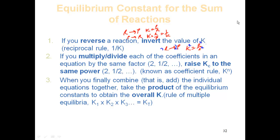When you combine — meaning add up individual reactions — you add them just like with Hess's law. However, what you do with the K's is different: instead of adding delta H's, the K values are multiplied together to obtain the overall K. This is the rule of multiple equilibrium: K1 times K2 times K3 equals K total.